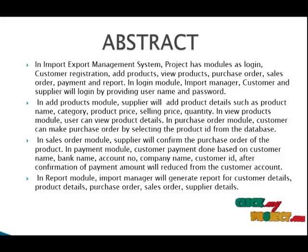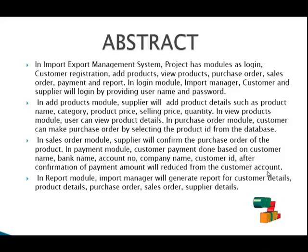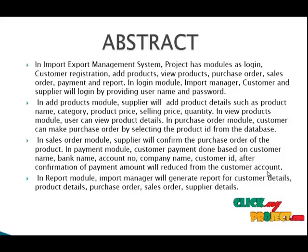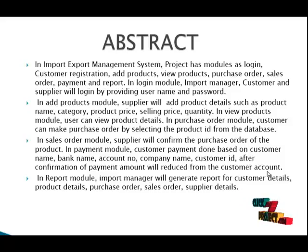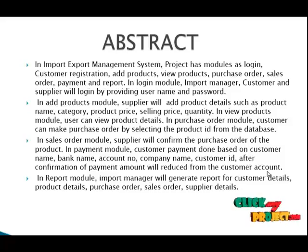In the Purchase Order module, the Customer can make purchase orders. In the Sales Order module, the Supplier will confirm the purchase order of the product. In the Payment module, customer payment is done based on Customer Name, Bank Name, Account Number, Company Name, and Customer ID. After confirmation of payment, the amount will be reduced from the customer account.